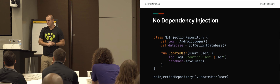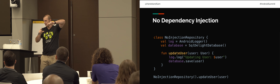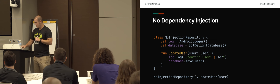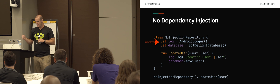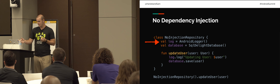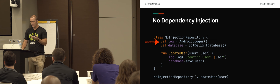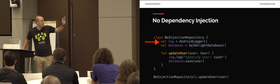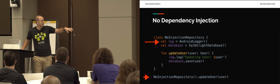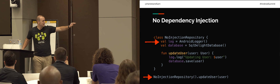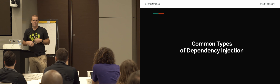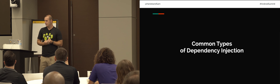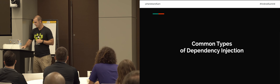So this is the no-dependency-injection code — the code containing the dependency. In our no-injection repository, this fake class has a logger and a database. The logger in here is an Android logger, so there's no way to change that out — it's always going to be AndroidLogger. So when you actually instantiate it and call the method, it's always going to print the Android log.